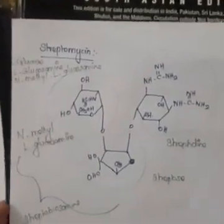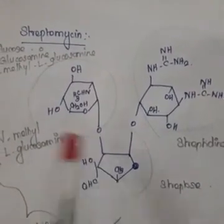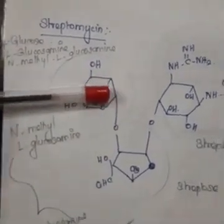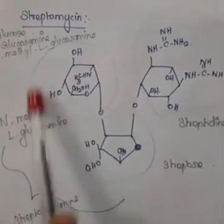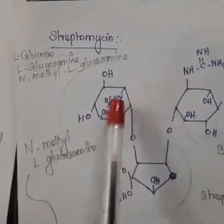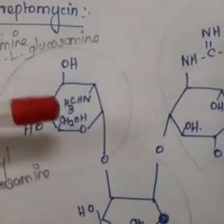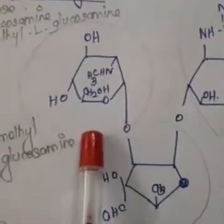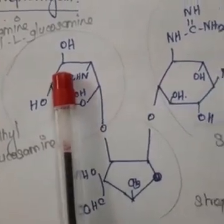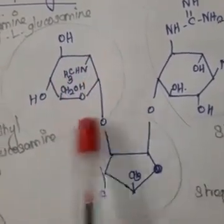The next drug is streptomycin, which is an aminoglycoside antibiotic. It has three parts. The first part is N-methyl-L-glucosamine. Without the CH3 group it would be glucose; with only NH2 added it is glucosamine; by replacing H on nitrogen with a methyl group it becomes N-methyl-L-glucosamine.